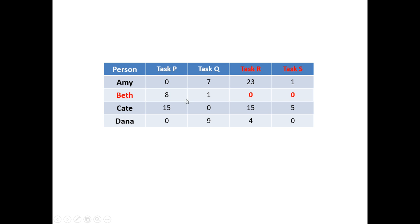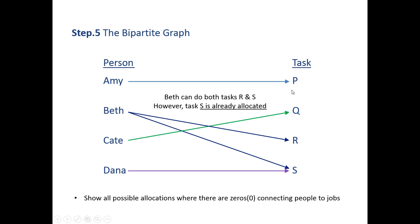Let's have a look. Beth, with our allocation technique, has got a zero next to task R and task S, so she could do either of those tasks. So Beth could do R or S. However, Dana's already allocated S, so R is the only one remaining. So Beth is also the only one that can do task R, so she has allocated task R. So now we've completed our bipartite graph. Each person is allocated to one single task.